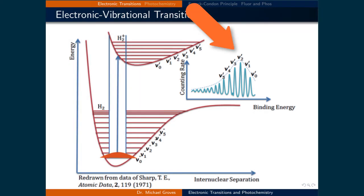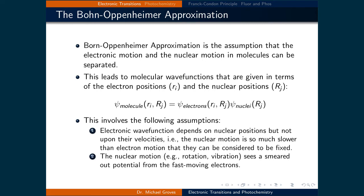It's quantified by the plot on the right, where the counting rate for each excited vibrational state is plotted. In the figure, the most likely excited vibrational state is the second state. To quantify these transitions, we first return to the Born-Oppenheimer approximation. The Born-Oppenheimer approximation assumes the electronic motion and the nuclear motion in molecules can be separated. This leads to molecular wave functions that are given in terms of the electronic positions and the nuclear positions.